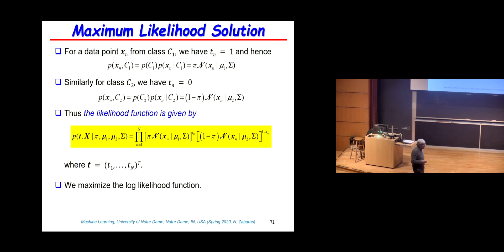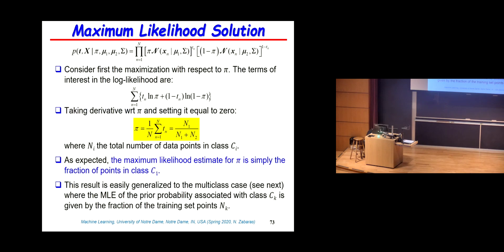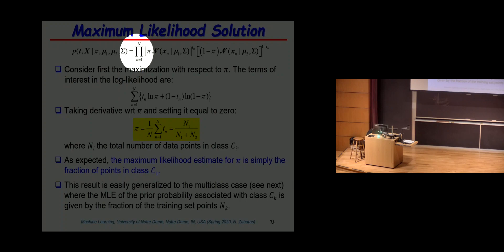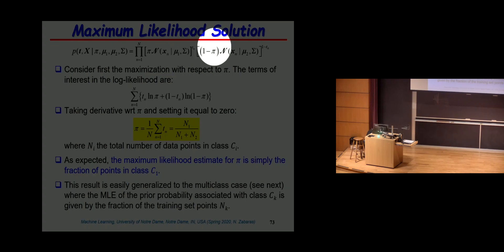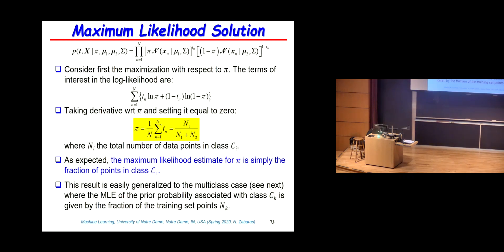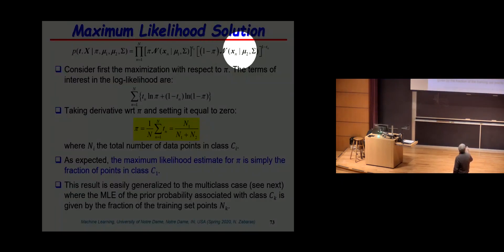We work with the log likelihood because it's easier. The product becomes a summation, t_n comes down, and you get the log of each term. The log of pi plus log of the Gaussian and similarly for the other term. The unknowns are pi, mu_1, mu_2, and sigma.